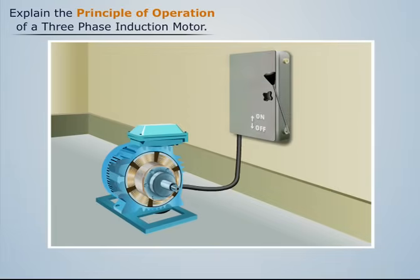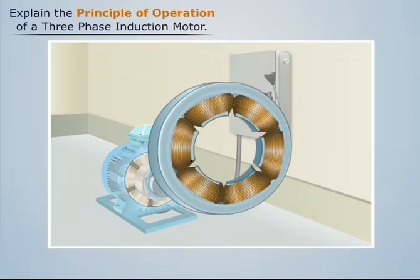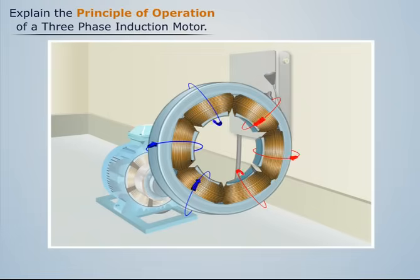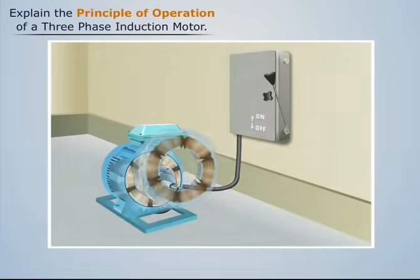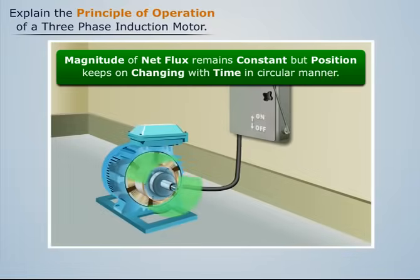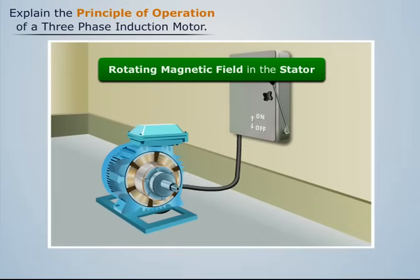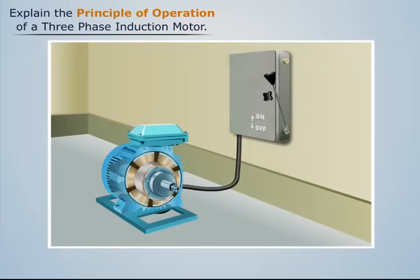When a three-phase AC supply is connected to the three-phase stator field windings, they start behaving like electromagnets and produce three independent alternating magnetic fluxes. The resultant of these fluxes is called the net flux. Its magnitude remains constant but its position keeps on changing with time in a circular manner. Hence, the net flux develops a rotating magnetic field in the stator, which causes relative motion between the net flux and the rotor.